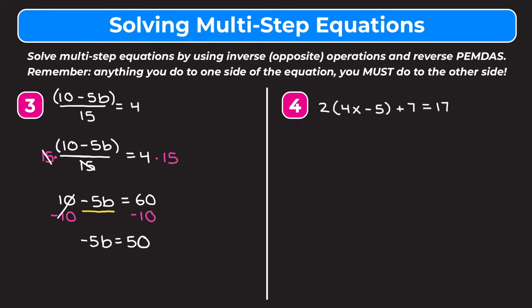To get rid of the negative 5 being multiplied we divide both sides by negative 5. On the left they cancel, leaving b. On the right 50 divided by negative 5 gives us negative 10. So b equals negative 10.